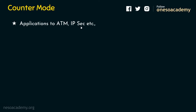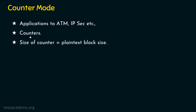In OFB, we used a nonce. Here, we are going to replace the nonce and introduce a counter. This counter acts as an important part in counter mode. The size of the counter is going to be the same as the size of the plaintext block. For example, if the plaintext block size is 128 bits, then the counter size is also going to be 128 bits.